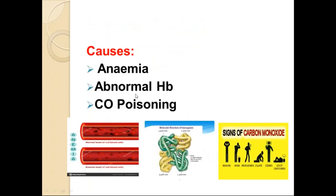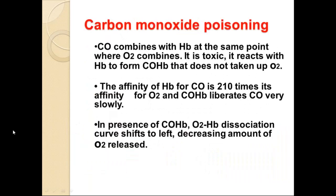The causes of anemic hypoxia include anemia, abnormal hemoglobin forms, and carbon monoxide poisoning. In carbon monoxide poisoning, the normal hemoglobin binding site for oxygen is occupied by carbon monoxide.